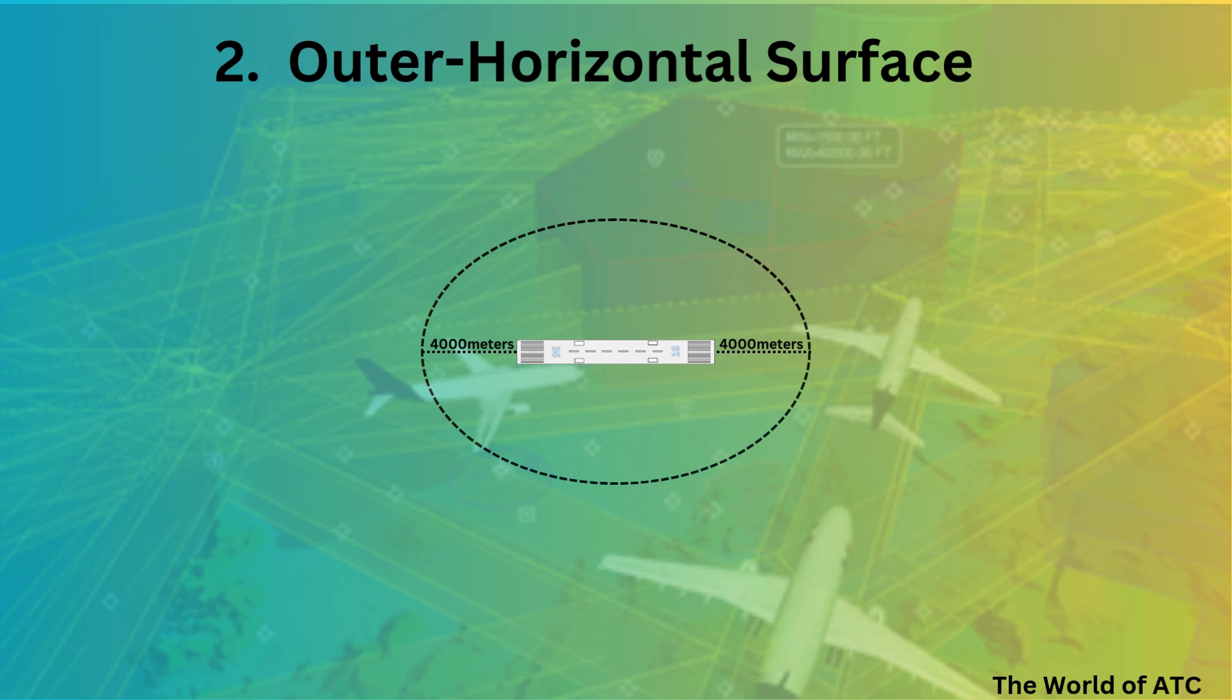These are two circles of 4000 meter radius from runway threshold joining the tangents. What surface is that? That is the inner horizontal surface.